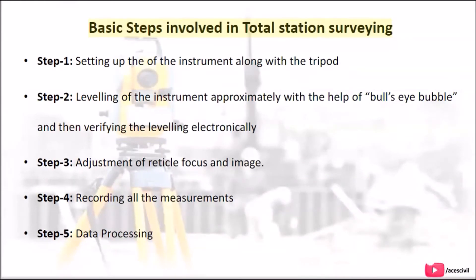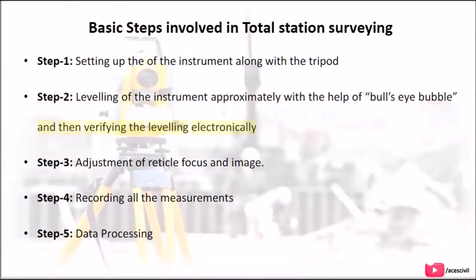Basic steps involved in Total Station surveying: Step 1 — Setting up the instrument along with the tripod. Step 2 — Leveling of the instrument approximately with the help of a bullseye bubble, and then verifying the leveling electronically.